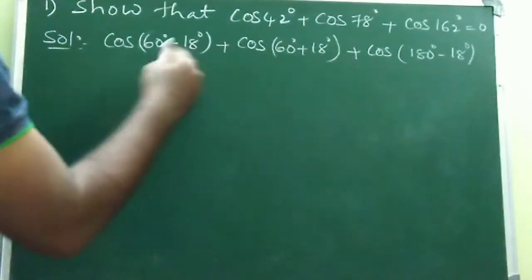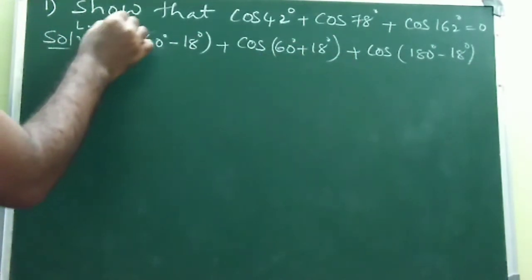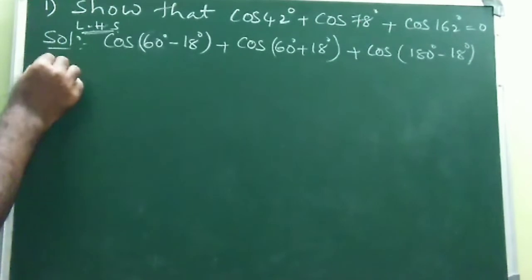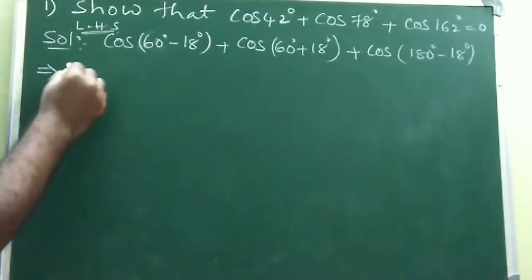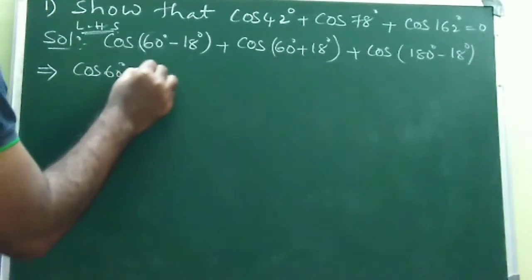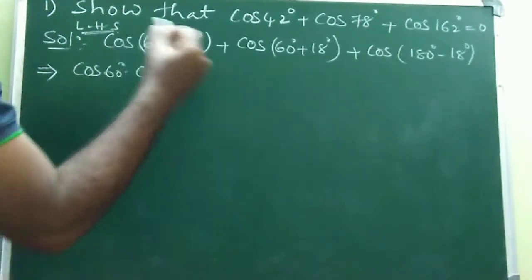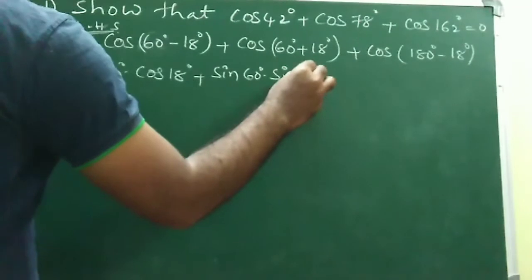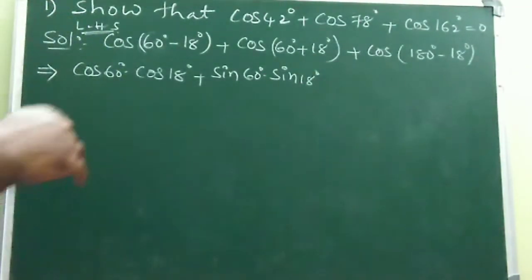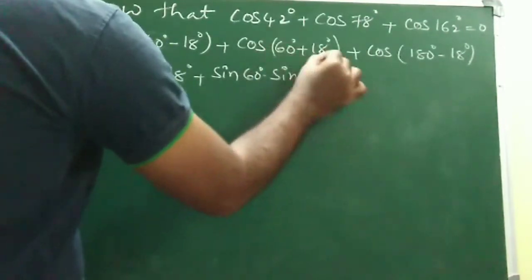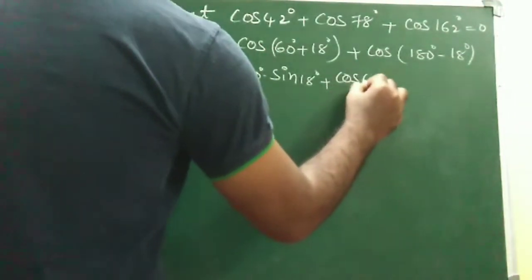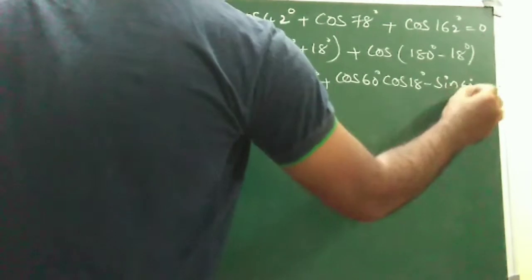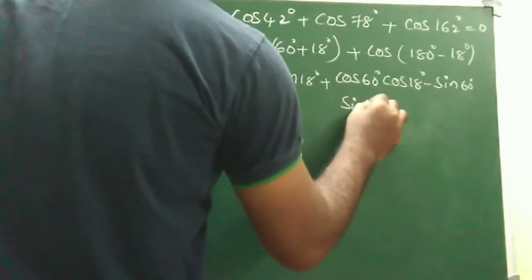So the first term is 60 minus 18, the second term is 60 plus 18, and that is the concept here. Let this be the LHS. Now expand cos(A - B): the formula gives cos A·cos B + sin A·sin B, that is cos 60°·cos 18° + sin 60°·sin 18°.